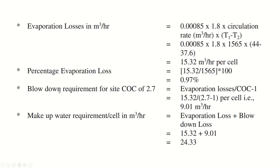For blowdown loss calculation, the cycles of concentration on site is given as 2.7. Using the formula — blowdown equals evaporation loss divided by (cycles of concentration minus one) — with evaporation loss of 15.32 and cycles of concentration of 2.7, we get blowdown loss of 9.01 m³/hr. These two losses — blowdown and evaporation — represent the amount of water wasted per hour that must be replenished.